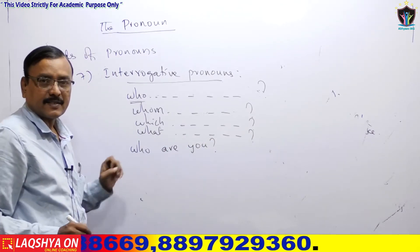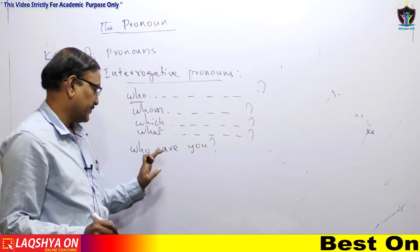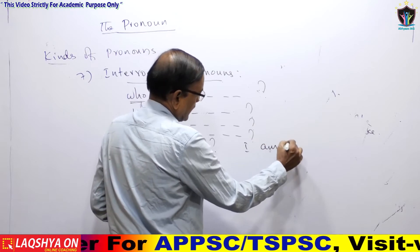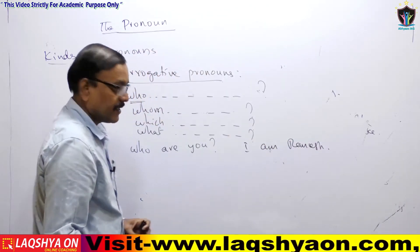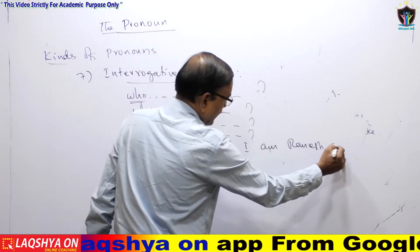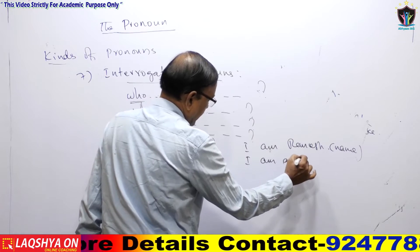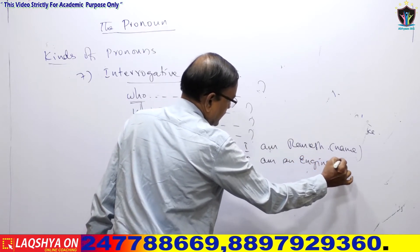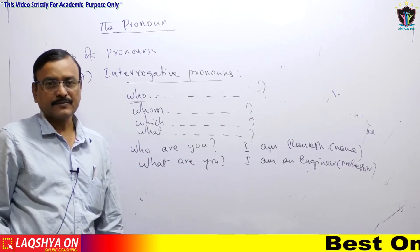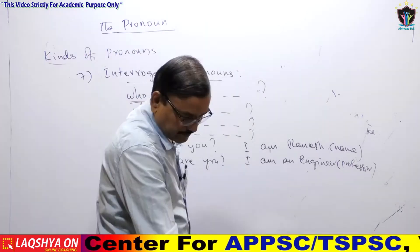'Who' is related to a person. 'Who are you?' — the answer would be a name, like 'I am Ramesh' or 'I am Srinivas.' But 'What are you?' asks about profession — the answer would be 'I am an engineer.' So 'what' indicates profession and 'who' indicates name.